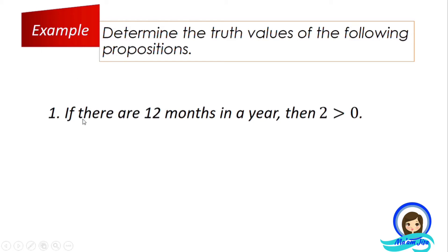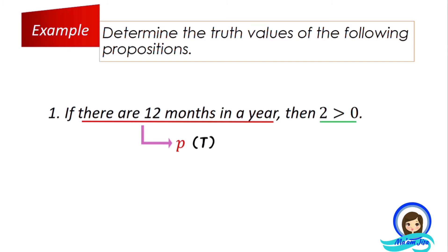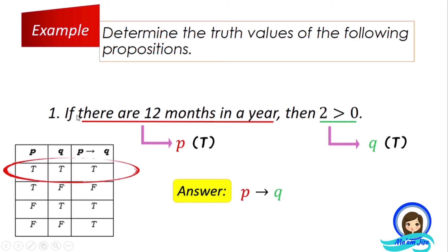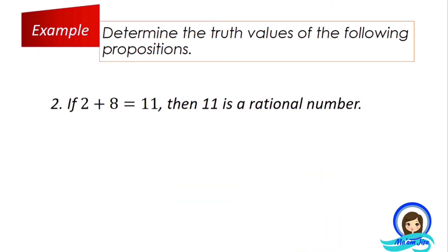Our first example: If there are twelve months in a year, then two is greater than zero. This is our hypothesis: there are twelve months in a year. And the conclusion or consequent: two is greater than zero. Our first proposition is true since indeed there are twelve months in a year. Our second proposition is also true because two is indeed greater than zero. Since both propositions are true, the truth value of this conditional statement is true.